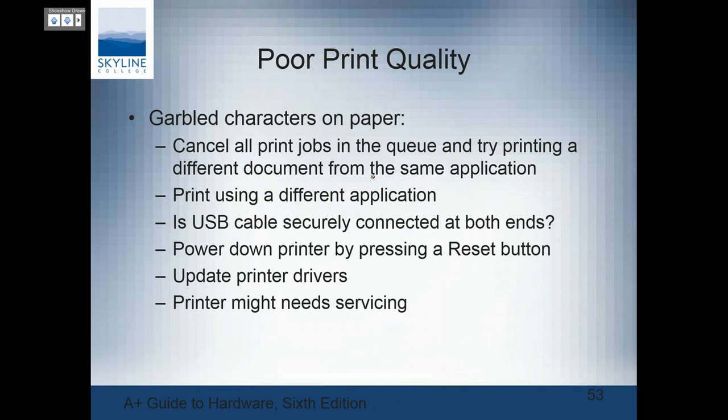For inkjet printers: use the correct paper, watch the ink supply level, and don't refill the cartridge too many times. Clean the sponge near the carriage rest — when not in use, the printhead sits on this sponge so the ink doesn't dry out. For transparencies, you may get too much ink. Impact printers: check the ribbon quality, adjust the printhead spacing, and check the printhead for dirt. For garbled characters, cancel the print jobs in the queue and try a different document using a different application. Check the cable, power down, and reset the printer — a lot of things can be fixed simply by resetting it.